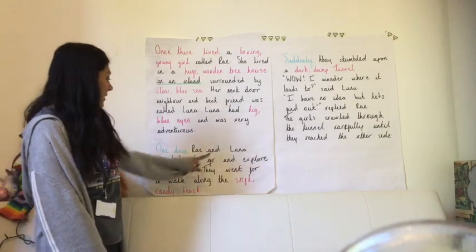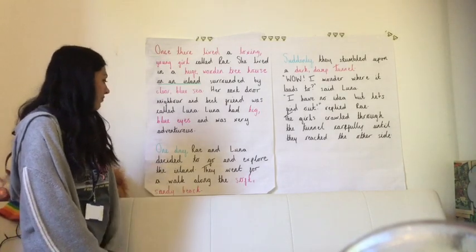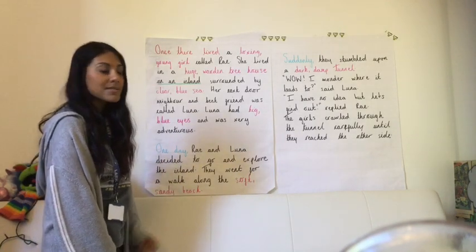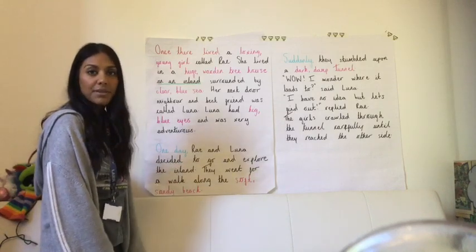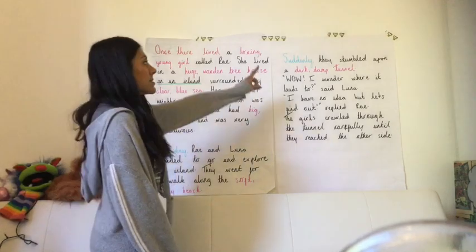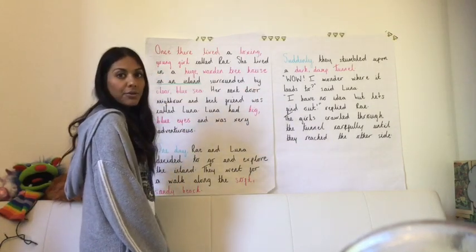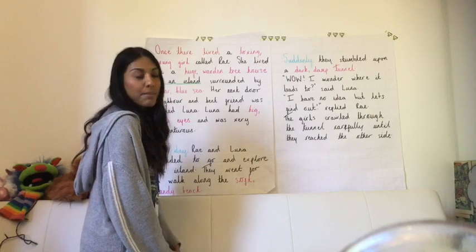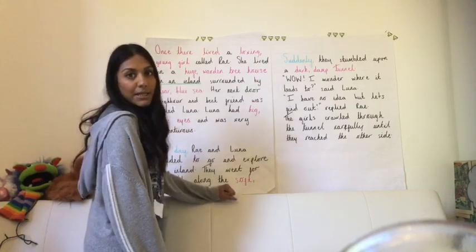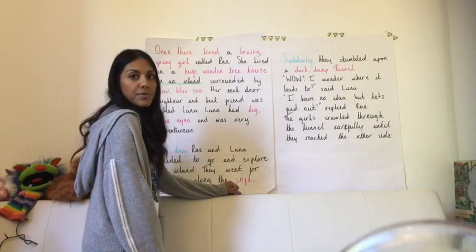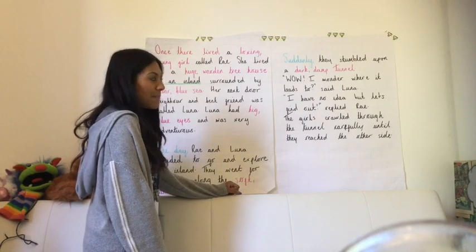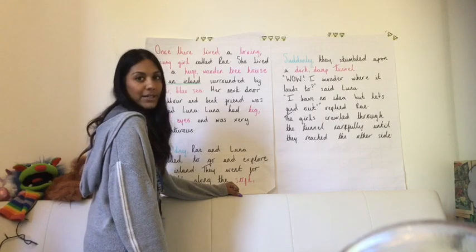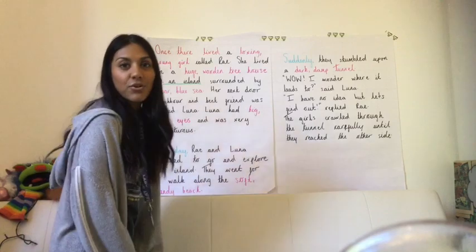One day, Ray and Luna decided to go and explore the island. They went for a walk along the soft, sandy beach. 'One day' in blue is a sentence starter, and 'soft, sandy beach' is another noun phrase in my description. Suddenly, they stumbled upon a dark, damp tunnel. 'Suddenly' is one of my sentence starters and 'dark, damp tunnel' is my noun phrase. Then I've got some speech: 'Wow, I wonder where it leads to,' said Luna. 'I have no idea, but let's find out,' replied Ray. The girls crawled through the tunnel carefully until they reached the other side. And that's as far as I've got with my story.